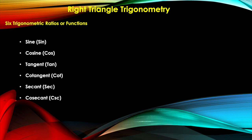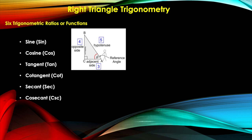Before we define these six trigonometric ratios or functions, let us first understand the different parts of the right triangle as used in right triangle trigonometry. A right triangle has three sides, and in right triangle trigonometry we name these three sides as the opposite side, adjacent side, and hypotenuse. The hypotenuse is the longest side, and the other two sides are the legs of the right triangle.